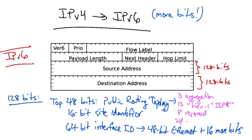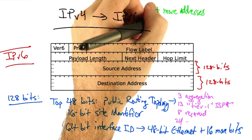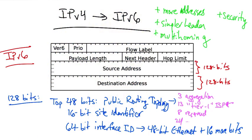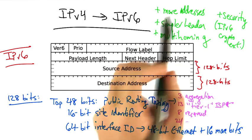IPv6 has many claimed benefits. There are more addresses. The header is simpler. Multi-homing is supposedly easier. Various aspects of security are built in, such as the IPv6 crypto extensions.